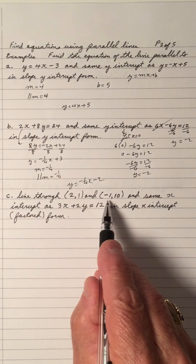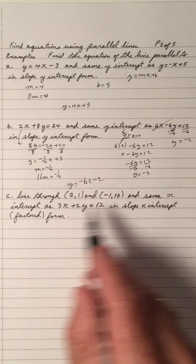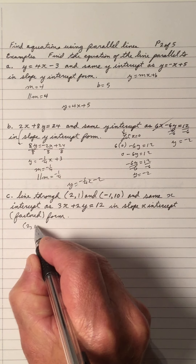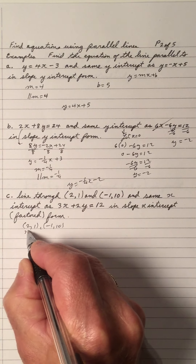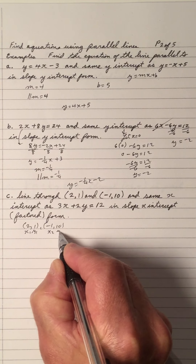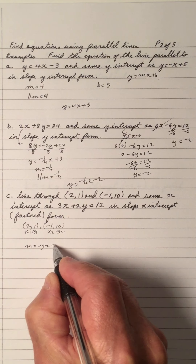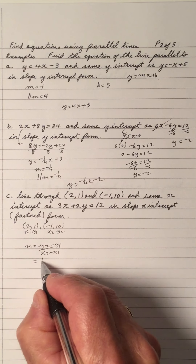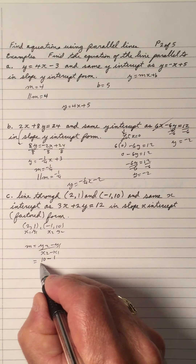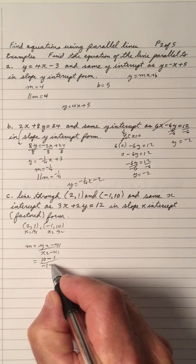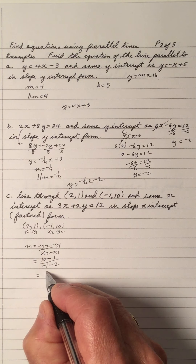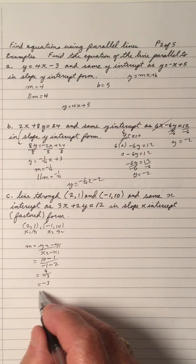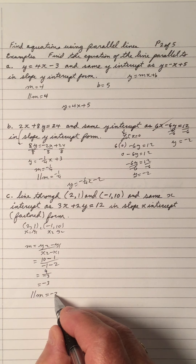Now, a line through these two points is going to be parallel to this line, having the same x-intercept as this line. Let's write down those two points. This is x1, y1, x2, y2. The slope formula is y2 minus y1 over x2 minus x1. So y2 is 10, minus y1 is 2 — that's x2 is negative 1, subtract 2. That gives me 9 on the top, negative 3 on the bottom, so the slope is negative 3.